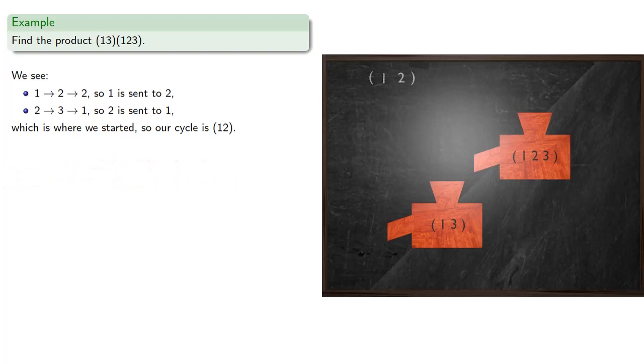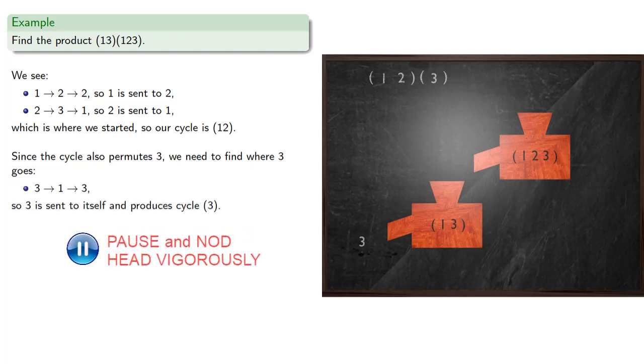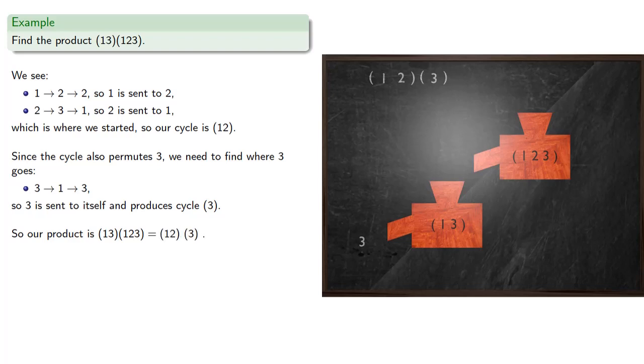Now since the cycles also permute 3, we also need to find where 3 goes. So we take 3, we drop it into the first cycle and get 1. We drop that into the second cycle and get 3. So 3 is sent to itself and produces the 1 cycle, (3). And so our product (1,3) by (1,2,3) is (1,2) by (3). Now since 1 cycle doesn't move its element, it doesn't actually do anything. And so we typically omit it.